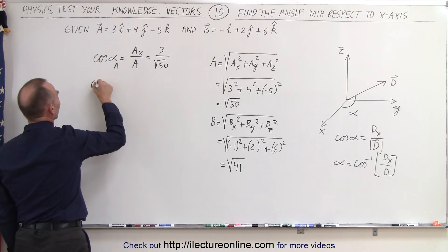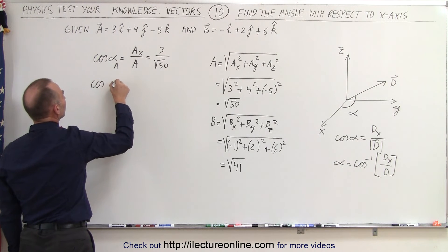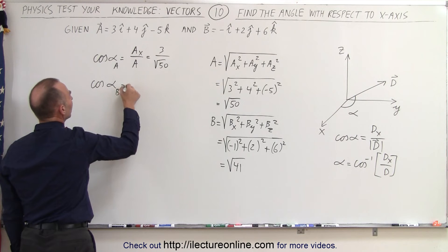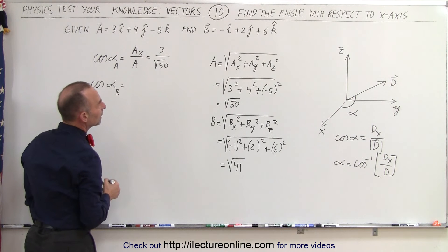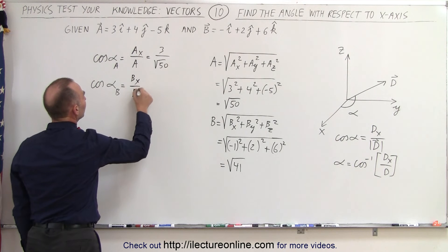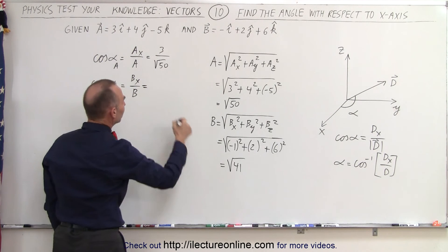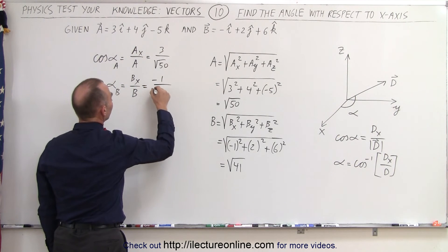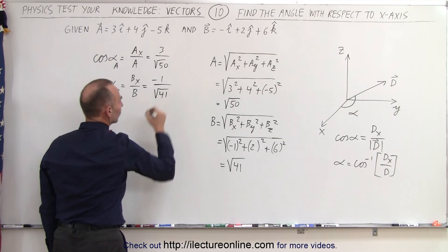Do the same for vector b. The direction cosine for vector b is equal to b sub x divided by the magnitude b. b sub x is equal to negative 1 and divided by the magnitude which is the square root of 41.